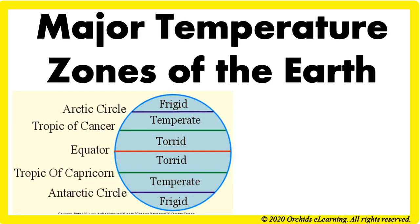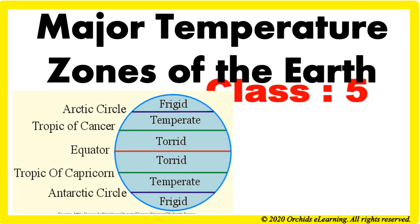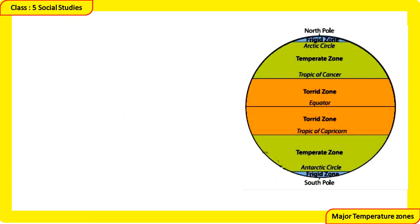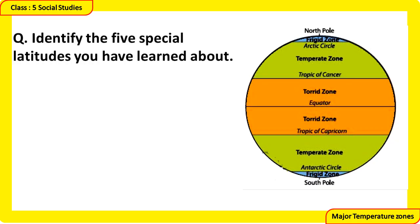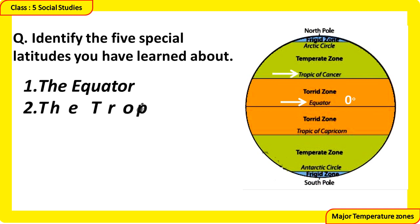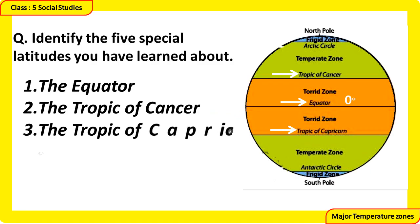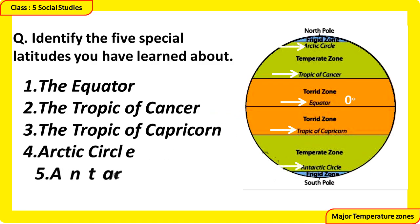Major temperature zones of the earth — Class 5 Social Studies. Children, look at the picture given and answer the questions below. First, identify the five special latitudes you have learned about. The answer is: the Equator, the Tropic of Cancer, the Tropic of Capricorn, the Arctic Circle, and the Antarctic Circle.